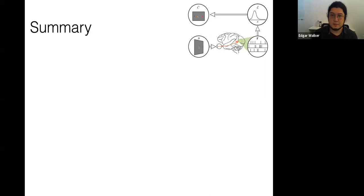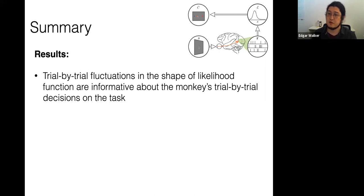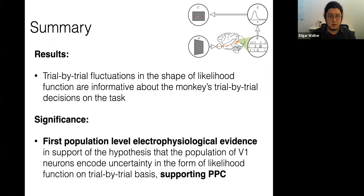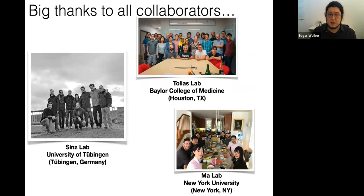In summary, the main results show that trial-by-trial fluctuations in the shape of the likelihood functions are informative about the monkey's trial-by-trial decisions. This provides the first population-level electrophysiological evidence in support of the hypothesis that populations of V1 neurons encode uncertainty in the form of the likelihood function on a trial-by-trial basis, lending support to the theory of probabilistic population code. Thanks to the great team of collaborators at the Sinz lab at University of Tübingen, the Tolias lab in Houston, Texas, and Wei-Ji's lab at NYU.